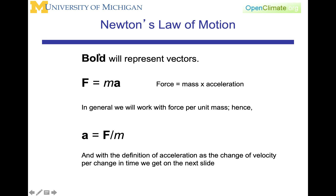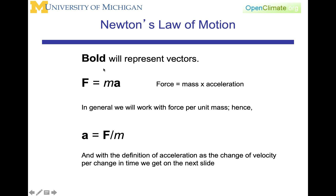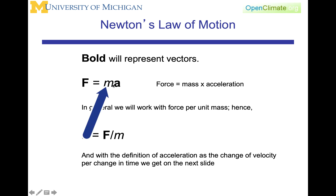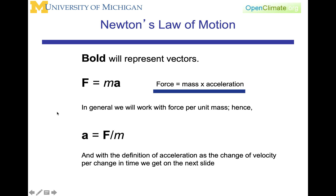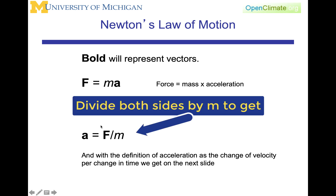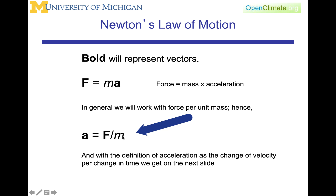Mathematically, bold notation will represent vectors. Newton's laws of motion are then represented by the equation F equals mass times acceleration. In general, we will work with force per unit mass. Dividing both sides by M, this form of the equation gives: acceleration equals F over M.